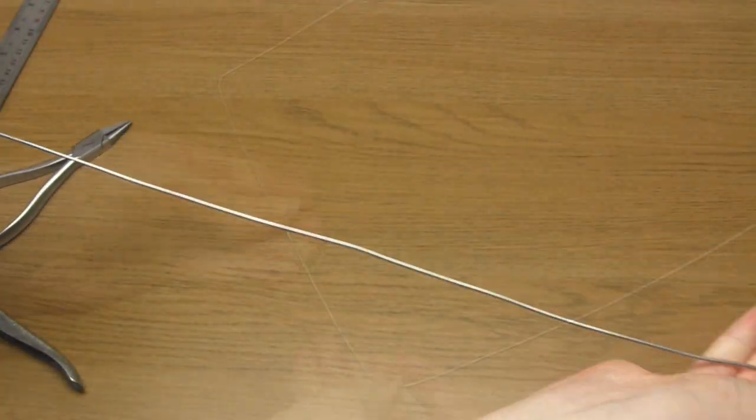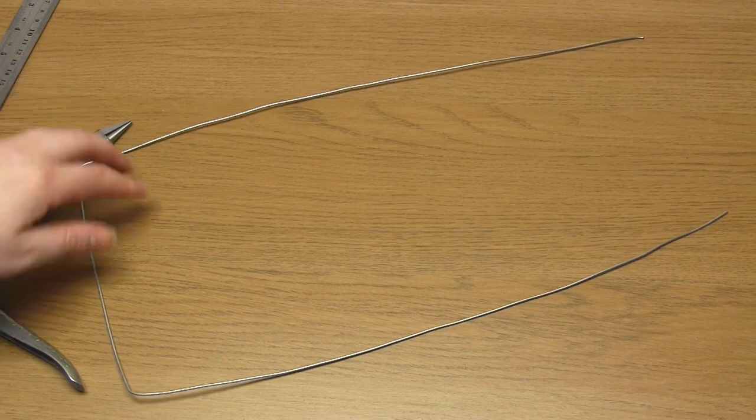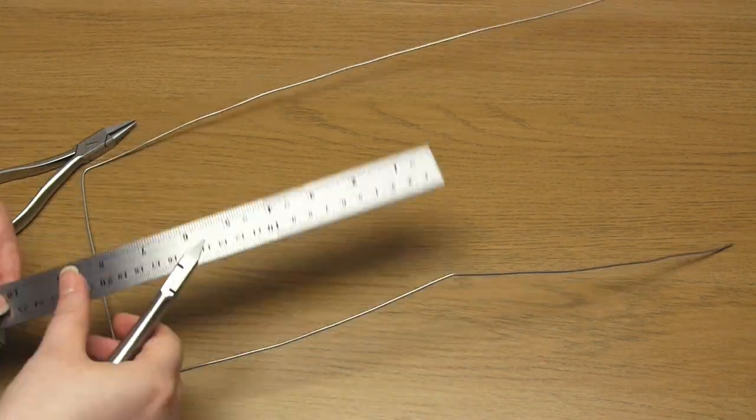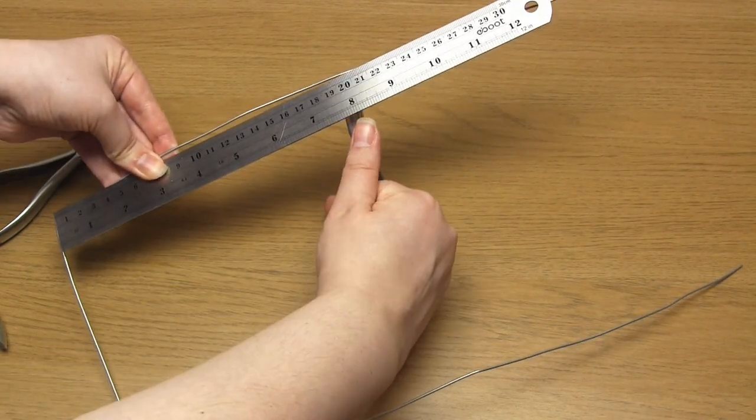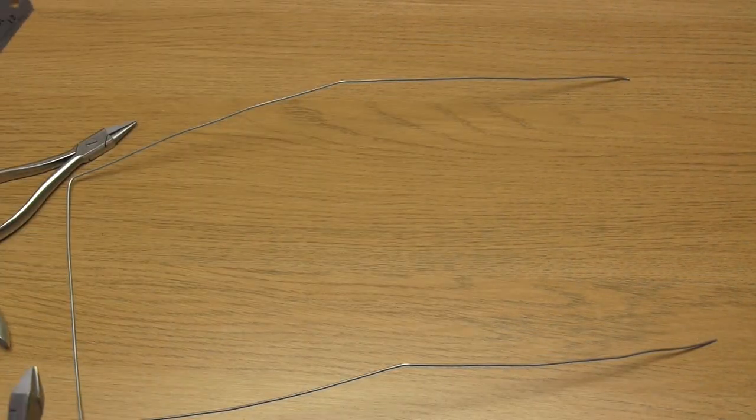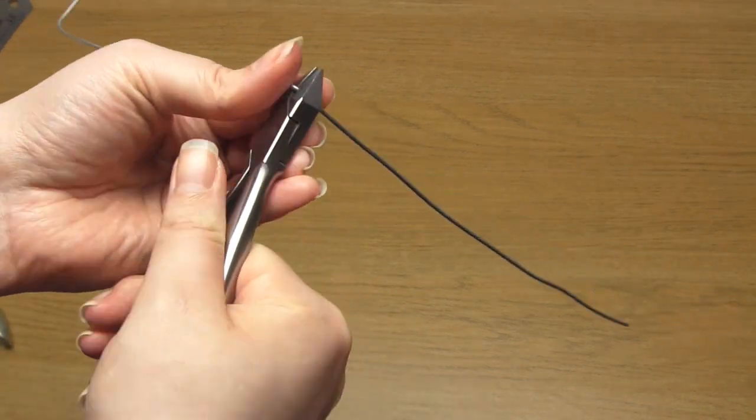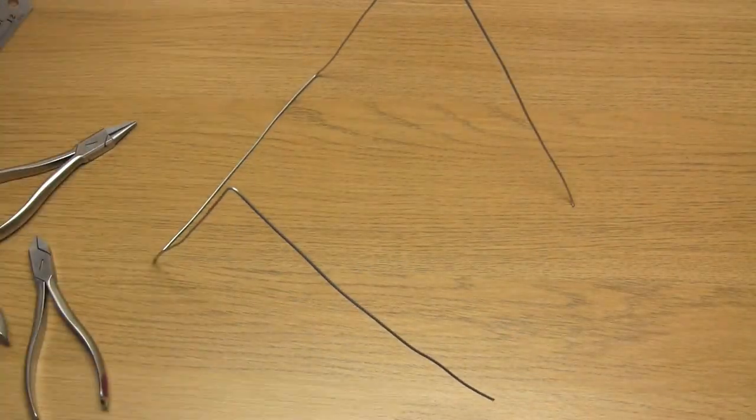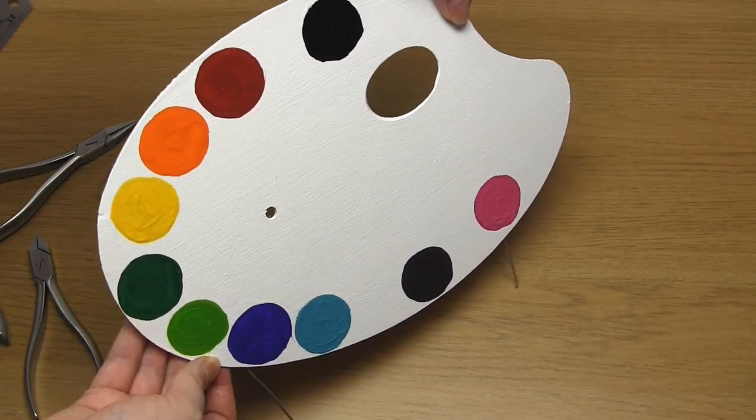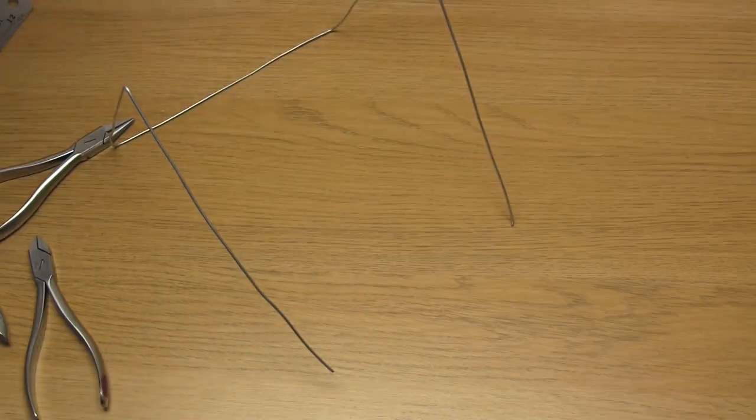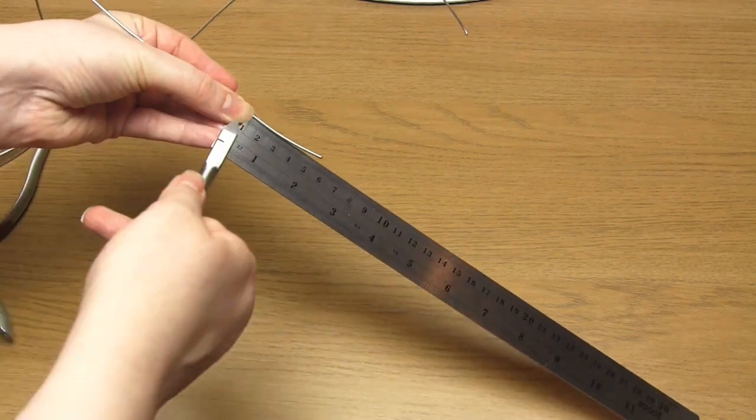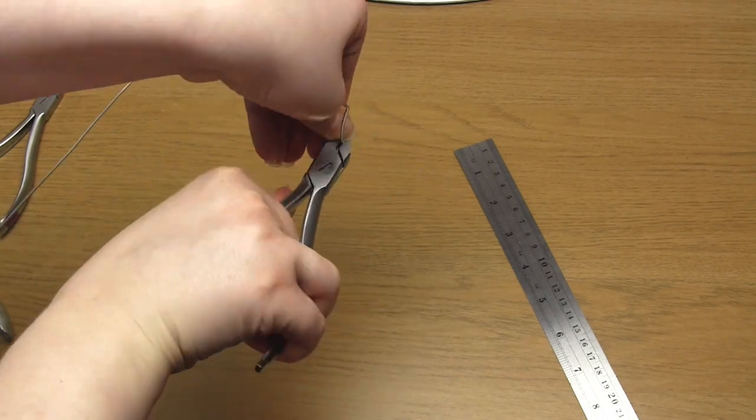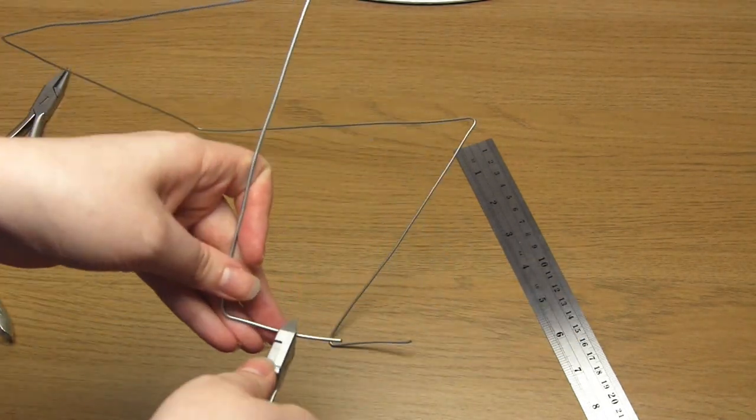I then bent each side of the wire shape to form the area that the palette would rest against. From here I made two little hooks on the ends of the wire in order to stop the palette sliding off the front of the stand.